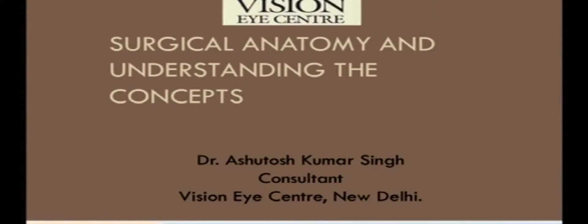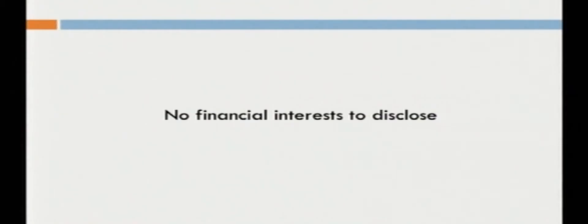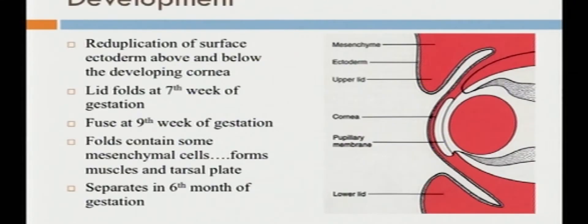Good afternoon everybody. I will be talking about surgical anatomy and understanding the concepts. To start with the development, the eyelid develops from the reduplication of surface ectoderm with the formation of a lid fold at the 7th week of gestation, that fused together at the 9th week of gestation and re-separates in the 6th month of gestation.